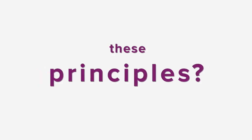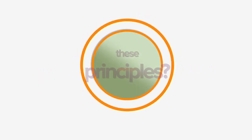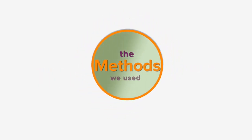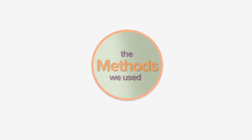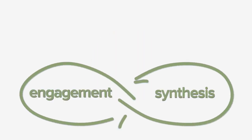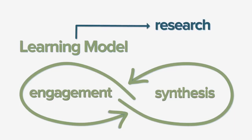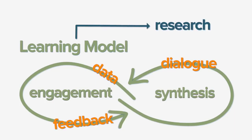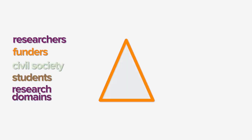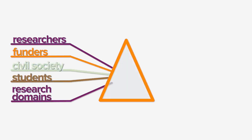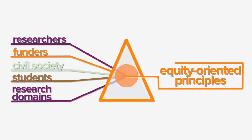How did we arrive at these principles? Let's shift our attention to the methods we used to arrive at this place. At the center of our work lie engagement and synthesis. Using this learning model to guide our research, we used data, dialogue and feedback to involve an entire spectrum of actors and different research domains in deliberation of our equity-oriented principles.